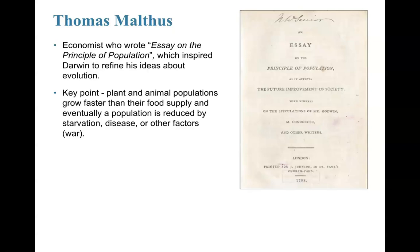If populations grow faster than their food supply, they are eventually reduced by starvation, disease, and other factors. There is a limit that a population can reach based on resources in their territory. When there is an abundance of food, the population grows faster, but eventually a limit is reached. Darwin read this essay in 1798 and used it to refine his own ideas on evolution.